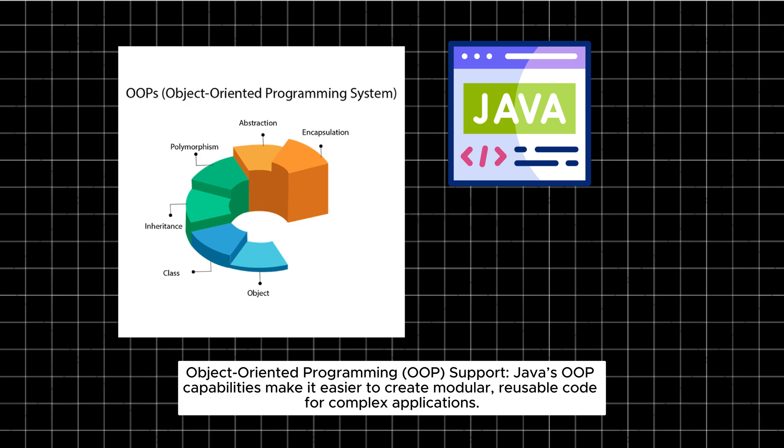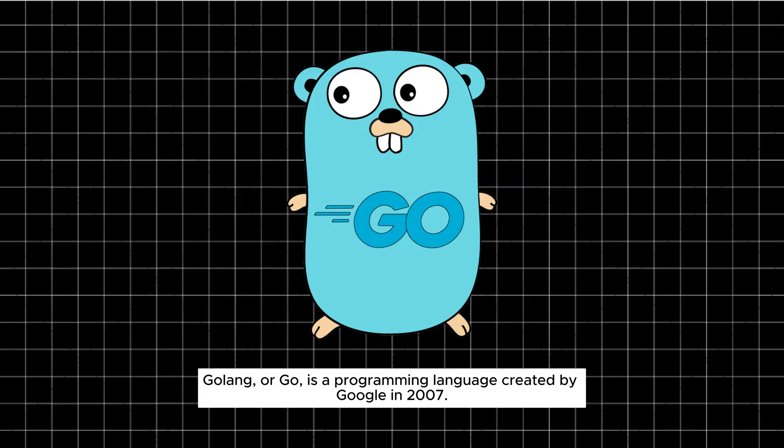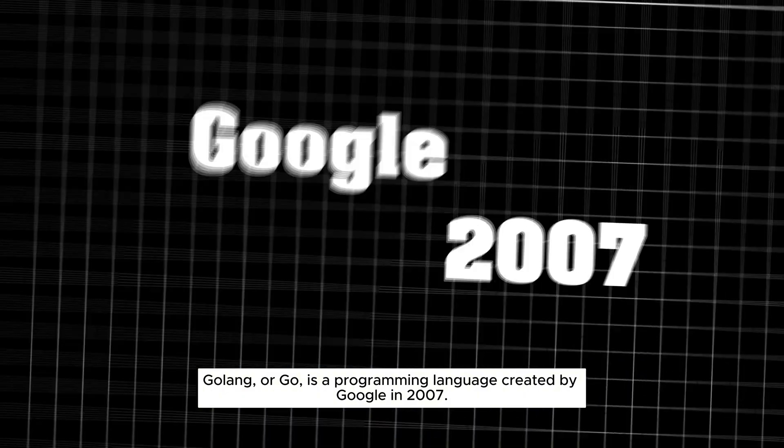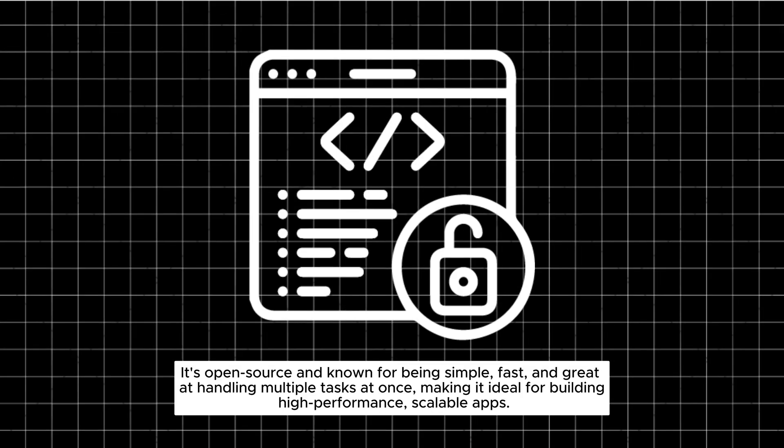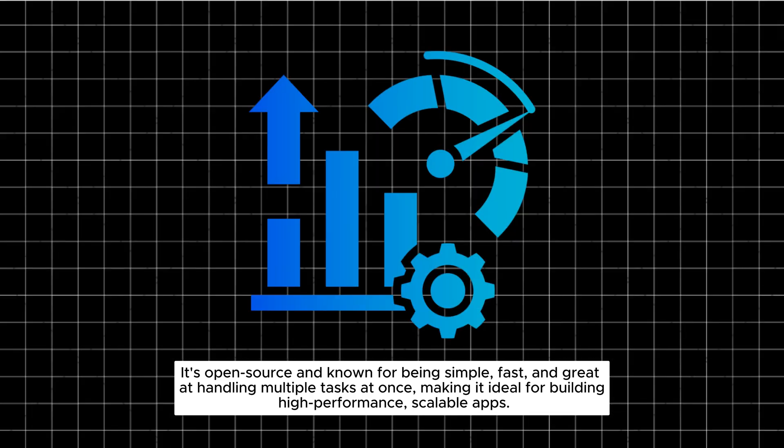Object-oriented programming (OOP) support: Java's OOP capabilities make it easier to create modular, reusable code for complex applications. Go, or Golang, is a programming language created by Google in 2007. It's open source and known for being simple, fast, and great at handling multiple tasks at once, making it ideal for building high-performance, scalable apps.